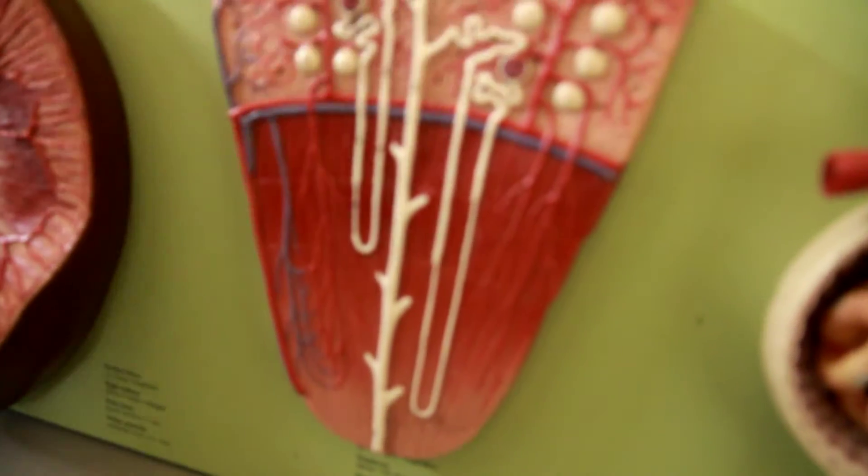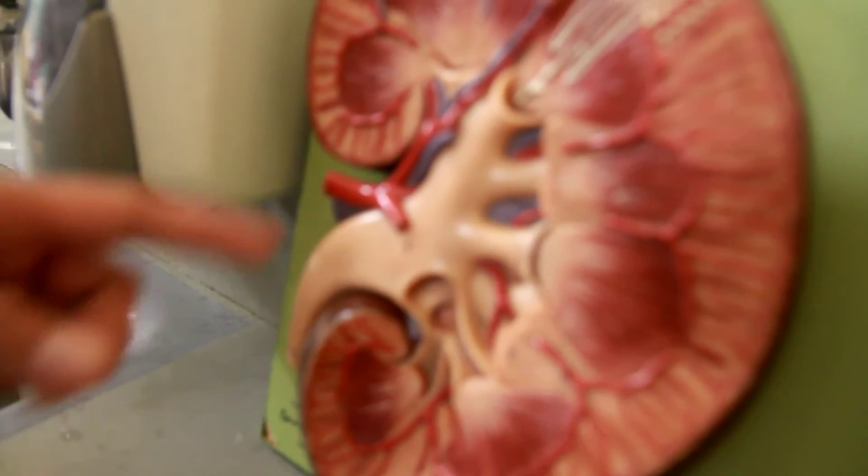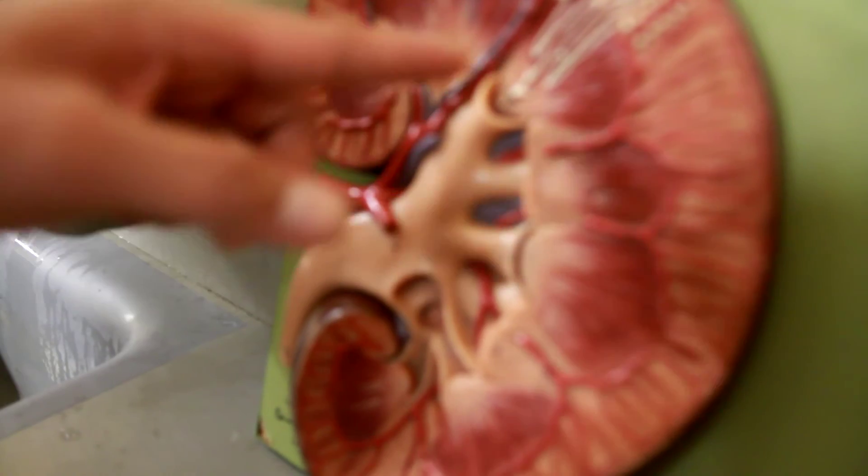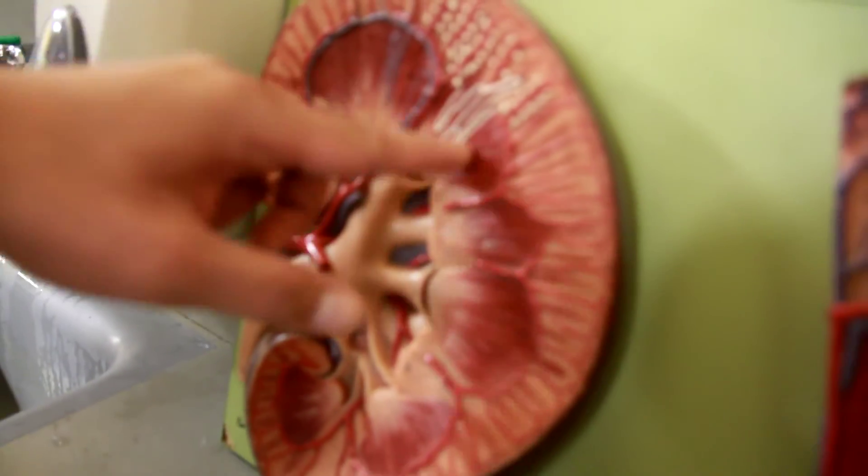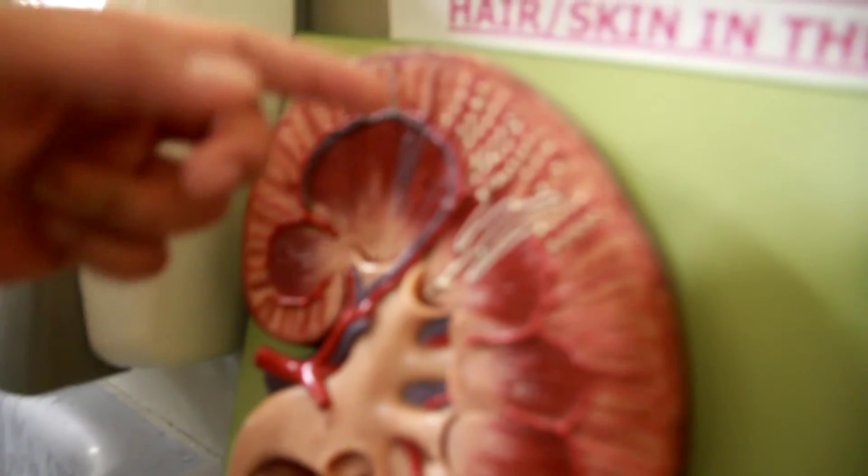And now the renal circulation. You have the renal artery which branches out into the segmental artery, and then the interlobar, which are between lobes, and then the arcuate, and then in between that is the interlobular.